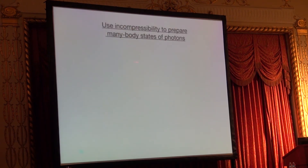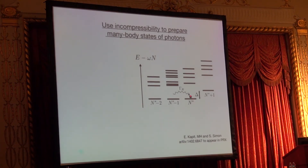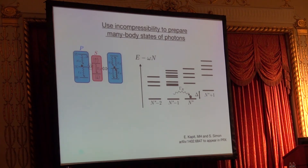So instead we have to think harder. One idea is to use the incompressibility of these many-body states. We know that fractional quantum Hall states are incompressible. Looking at the spectrum of the system in the rotating frame, the spectrum is flat and then at some point it has a gap. So instead of coherently driving all states, we add photons one by one. We come to the gap and then cannot add any more photons — we get trapped against the wall. If we lose a photon, the single-photon pump puts us back into that state. It will be a steady state — not a ground state, but a Laughlin state. This work will appear soon in PRX.